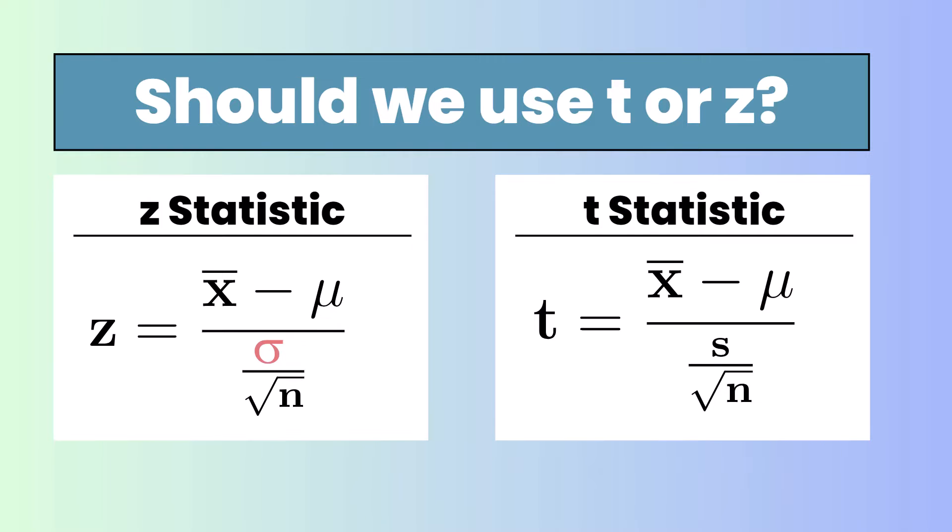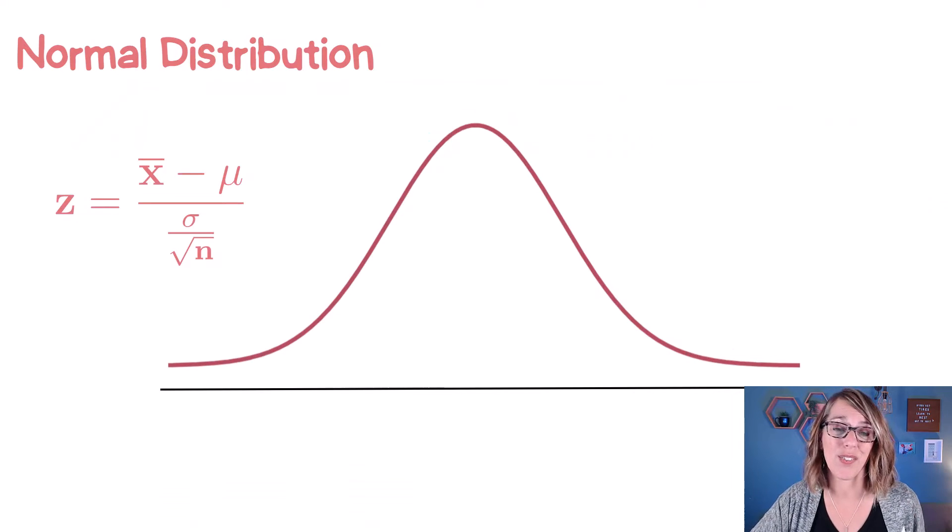Now for the T statistic, it looks almost identical. The only difference is S and S represents our sample standard deviation. These two values are very, very similar. And the distributions are also similar.